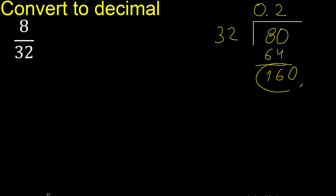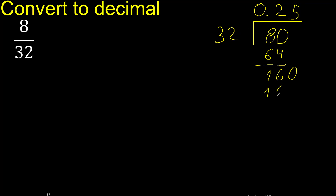160. 32 multiplied by which number? Multiply by 5 is 160 — exact. Subtract is 0, therefore finish.